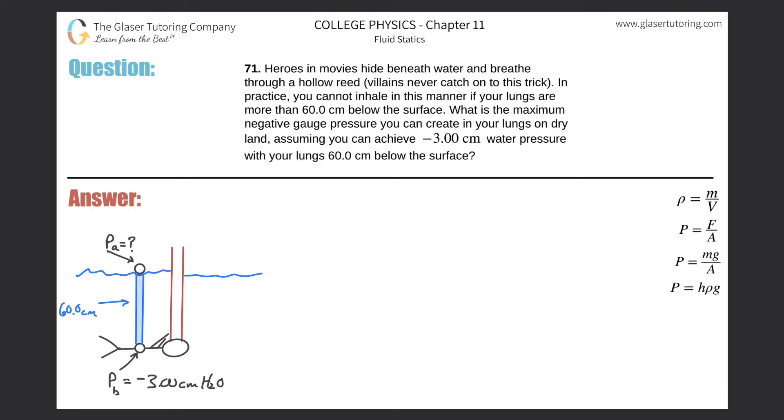Number 71. Heroes in movies hide beneath water and breathe through a hollow reed. Villains never catch on to this trick. In practice, you cannot inhale in this manner if your lungs are more than 60 centimeters below the surface. What is the maximum negative gauge pressure you can create in your lungs on dry land, assuming you can achieve negative 3 centimeters of water pressure with your lungs 60 centimeters below the surface?